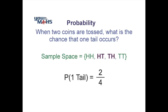Let's have a look now at the probability of getting one tail. There are two favourable outcomes, as we can see from our sample space. We could get a head and a tail, or we could get a tail and a head. So there are two possibilities out of four outcomes in total. So the probability of getting one tail is two out of four.